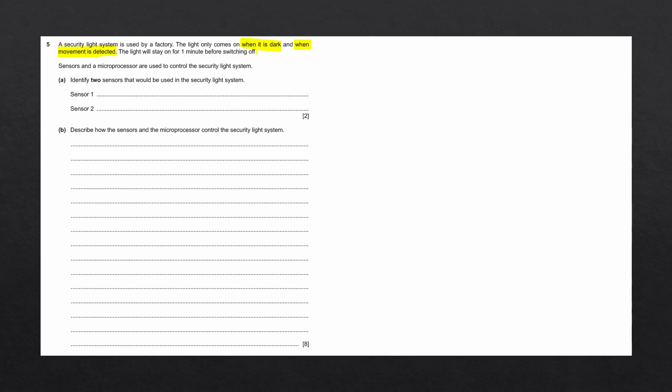We would need two separate sensors to detect each of these. If we want to detect whether it is light or dark, we would use a light sensor. And if we want to detect movements, we would use a motion sensor.